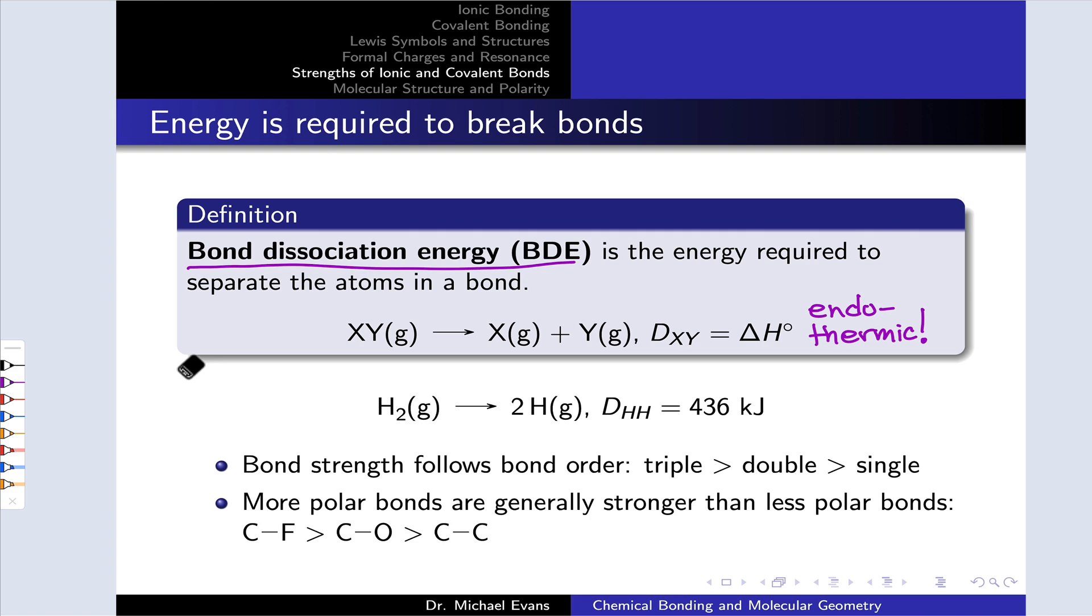One important thing to appreciate about covalent bond dissociation energies is that they are an average for that bond in many different molecules. If we think, for example, about a carbon-carbon bond or a carbon-hydrogen bond, these types of covalent bonds show up in a huge variety of molecules, and the other atoms in the molecule do have an influence on the strength of the carbon-carbon or carbon-hydrogen bond.